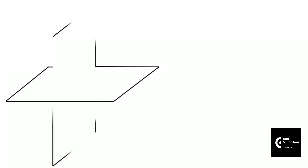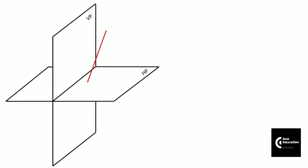I will take an example here. I have taken a vertical plane and horizontal plane with one line AB, which is parallel to the vertical plane. End A of line AB is kept 10 mm above the horizontal plane and 25 mm in front of the vertical plane. This line AB makes an angle of 30 degrees with the horizontal plane. That is the data given for this line.